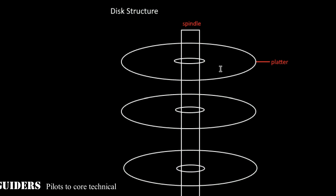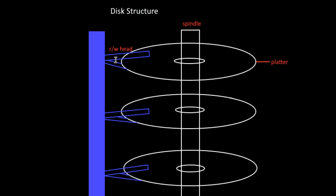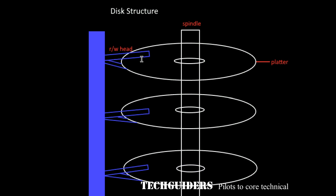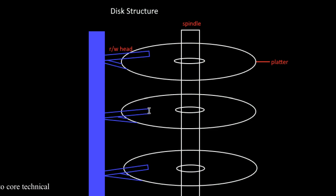To read or write data from each surface, each surface will be associated with a read-write head. The read-write heads for all the surfaces are mounted on an arm which can move these heads toward the central spindle and away from the spindle towards the edge. All the heads move together in a synchronized fashion and they will all be at the same relative position at a time.